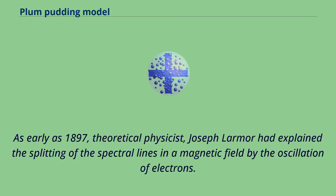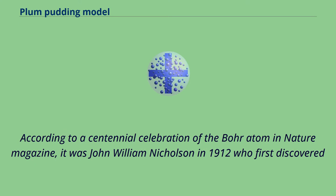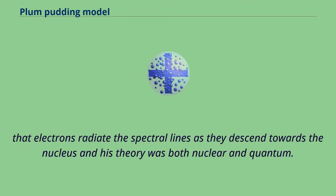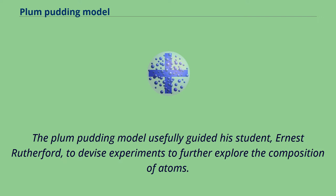As early as 1897, theoretical physicist Joseph Larmor had explained the splitting of spectral lines in a magnetic field by the oscillation of electrons. According to a centennial celebration of the Bohr atom in Nature magazine, it was John William Nicholson in 1912 who first discovered that electrons radiate spectral lines as they descend towards the nucleus, and his theory was both nuclear and quantum. The Plum-Pudding model usefully guided his student, Ernest Rutherford, to devise experiments to further explore the composition of atoms.